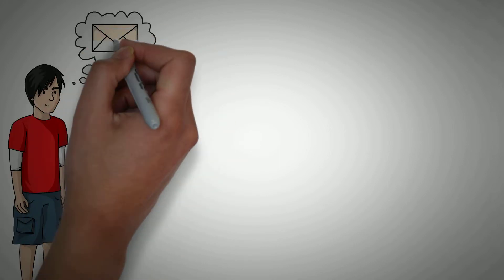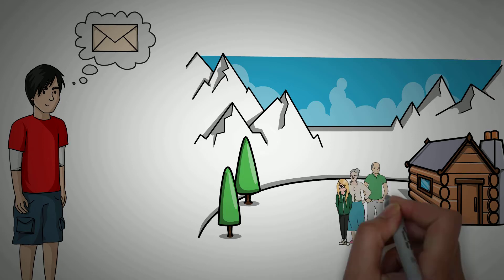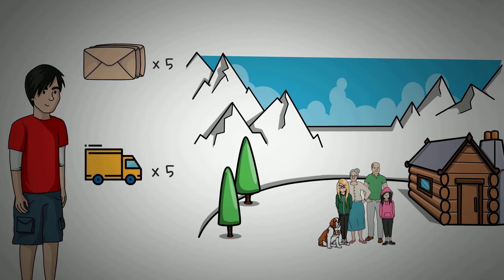Imagine if you wanted to send your family in Alaska a letter. You have an uncle, an aunt, your two cousins, and their dog. Now if you were crazy, what you would do is write each of them separate letters, put them in separate cards, and then pay the shipping for five different letters.